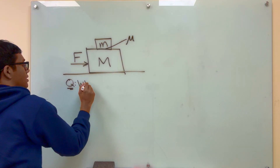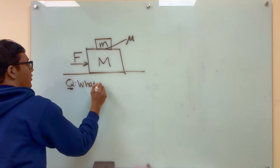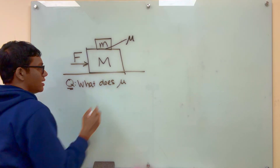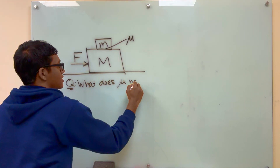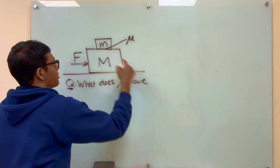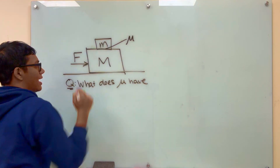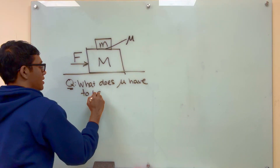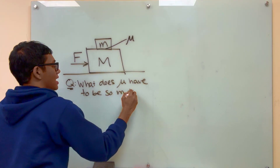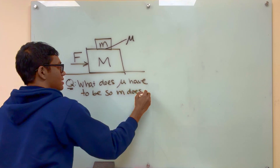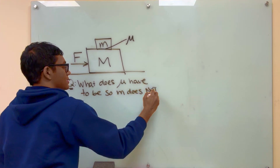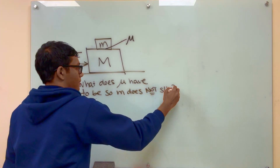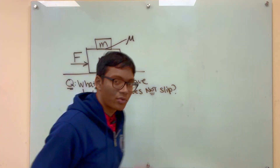What does the coefficient of friction, mu, have to be so that the top block M does not slip?